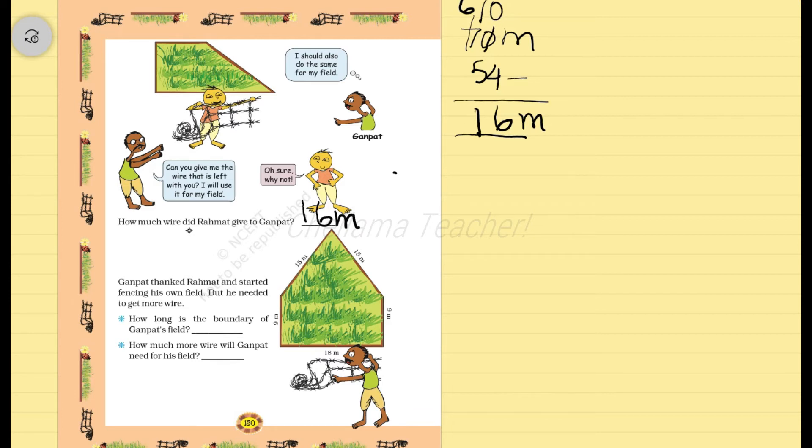So now Ganpag said, Ganpag thanked Rahmat and started fencing his own field. But he needed to get more wire. So first we have to calculate the boundary length of the Ganpag's field. So this is the Ganpag's field. We have to calculate the boundary length of the Ganpag's field. So how to do?